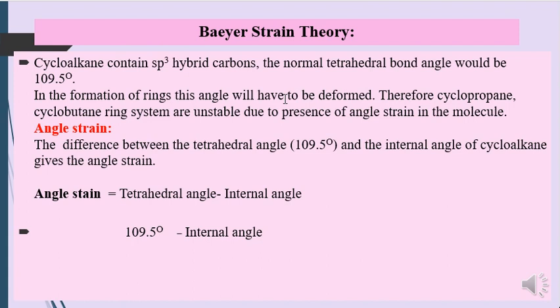Therefore, cyclobutane and cyclopropane ring systems are unstable due to the presence of angle strain, because the normal bond angle of 109.5° has to be deformed in the formation of the ring. Angle strain is defined as the difference between the tetrahedral angle (109.5°) and the internal angle of the cycloalkane: Angle strain = 109.5° − internal angle.